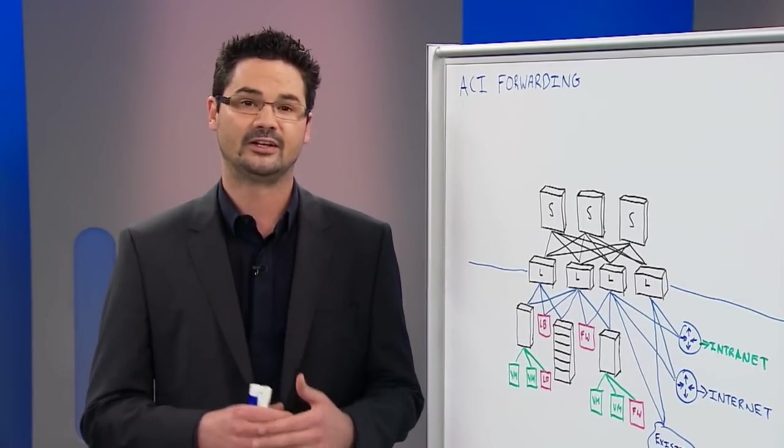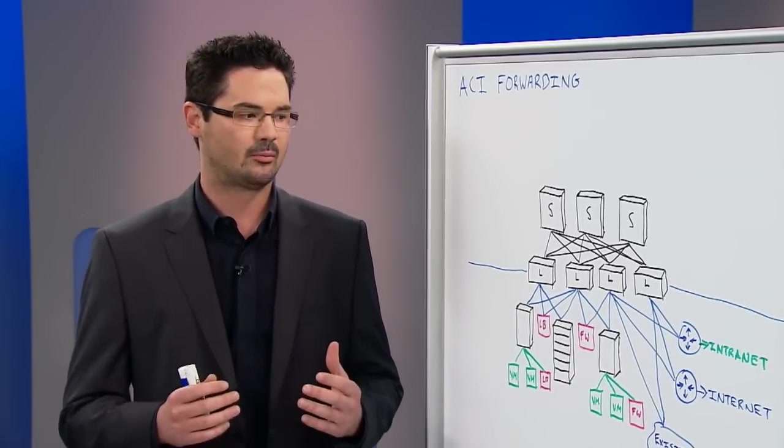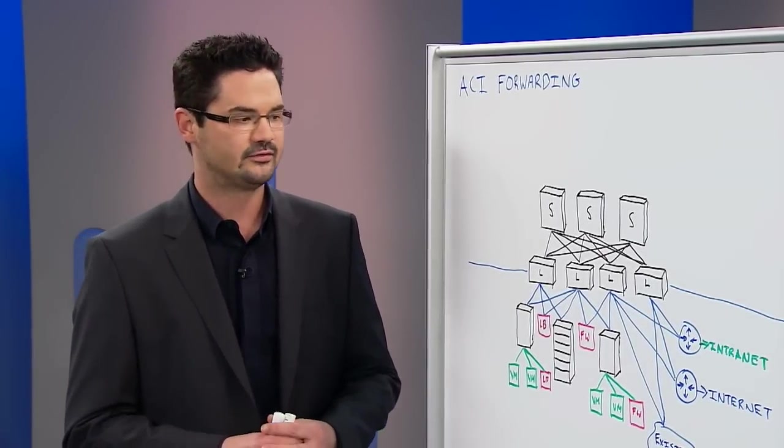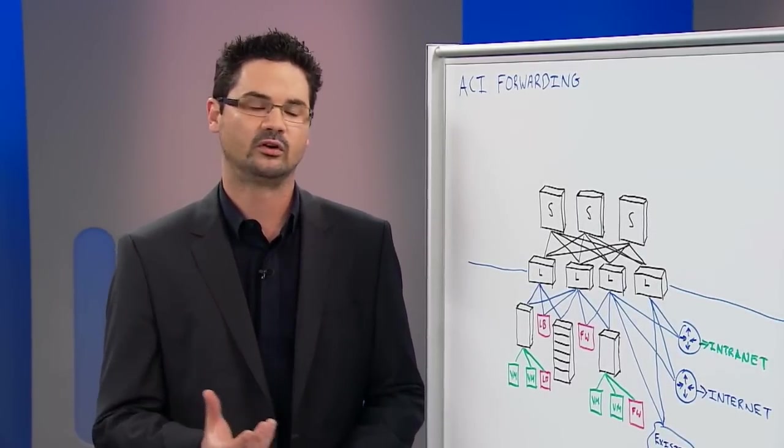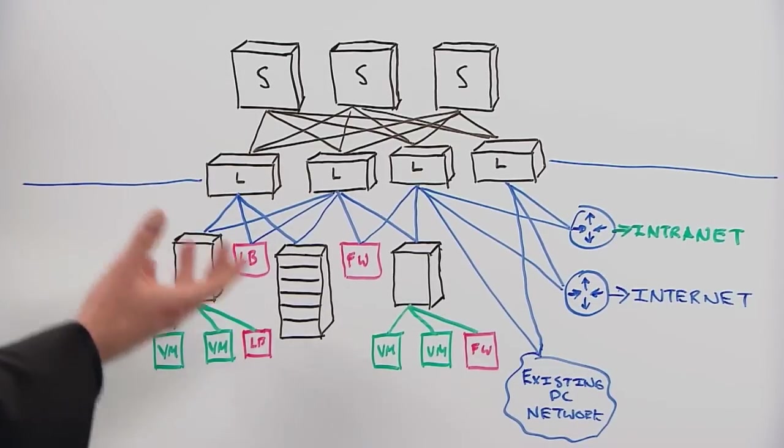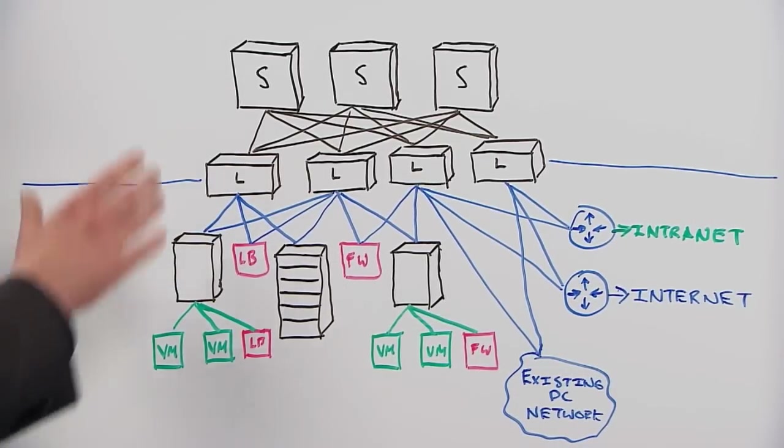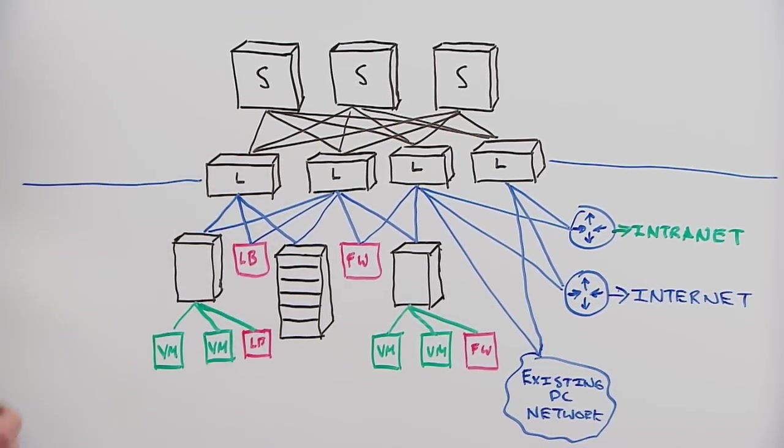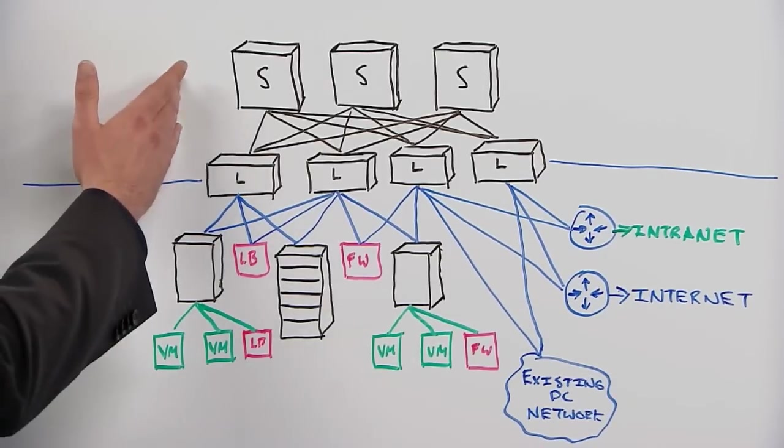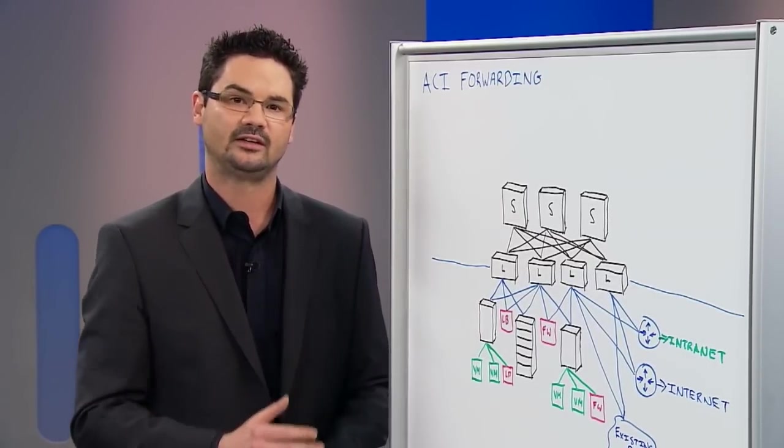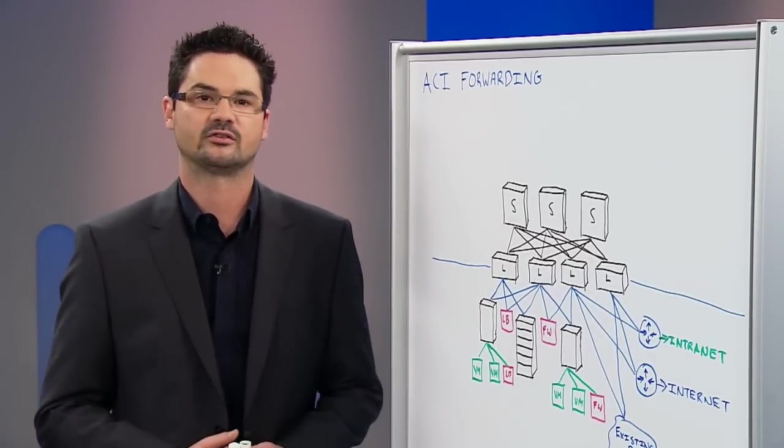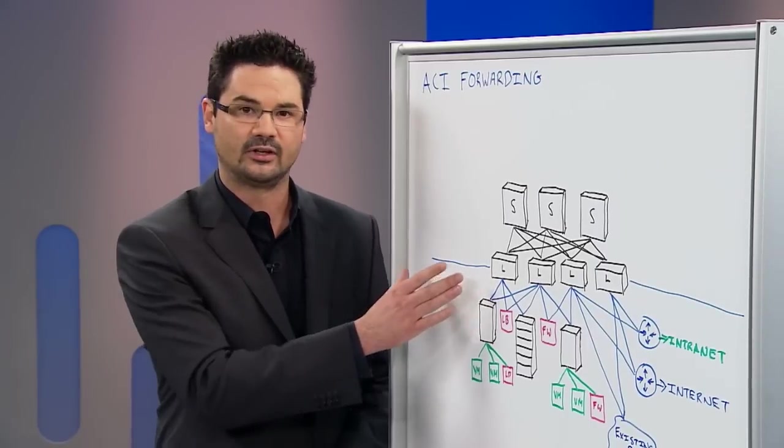It also offers us very linear scale. With this type of fabric, the Clos architecture or spine-leaf design, when you need more server or device connectivity ports, you simply add a leaf. And you can add leaves up to the scale of the amount of spines that you have in the fabric. When you need more redundancy or more paths for bandwidth within the fabric, you simply add a spine switch. We typically connect every leaf to every spine, and the spines will only connect the leaves. Everything else in your network architecture is going to connect up here at the leaf layer.